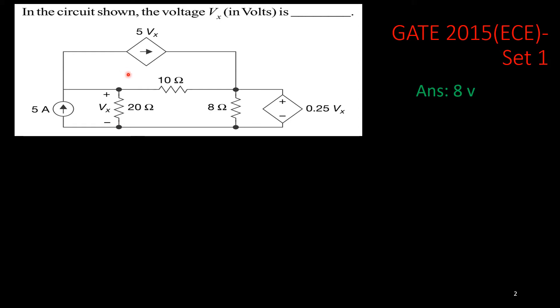Again it is depending on the same potential across 20 ohm. This dependent current source will provide 5 times Vx current, and the dependent voltage source will provide 0.25 Vx. And here, 10 ohm resistance between these two nodes, and 8 ohm across this dependent source. This is the circuit.